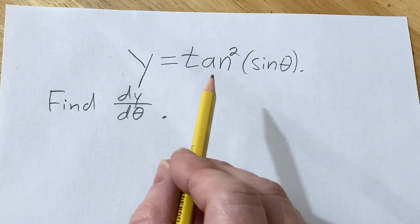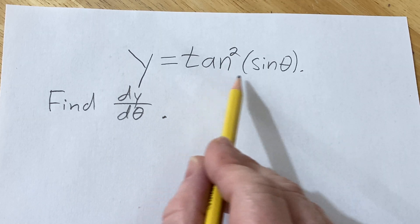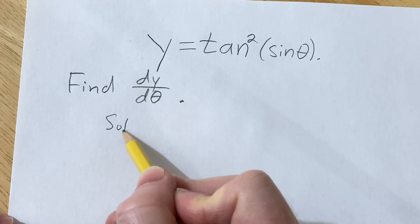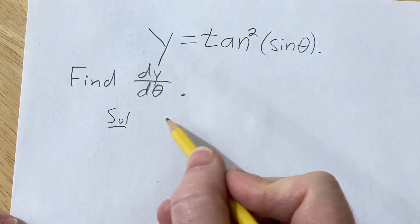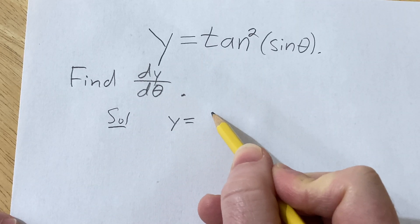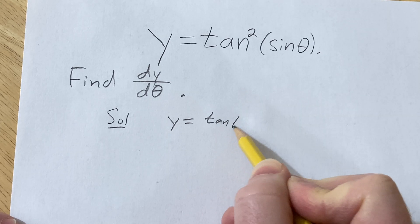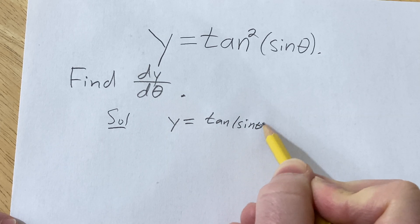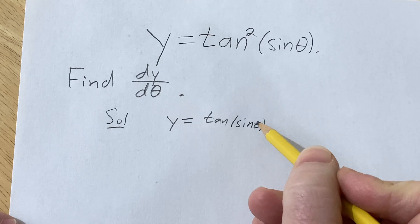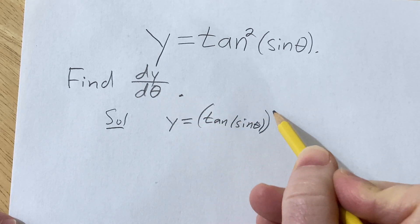Before we do this derivative, it might be helpful to think about this a different way. Solution: You want to think about this like this. This is y equals tangent of the sine of theta, and the two here means it's squared. It's a shorthand notation, so it's really this.